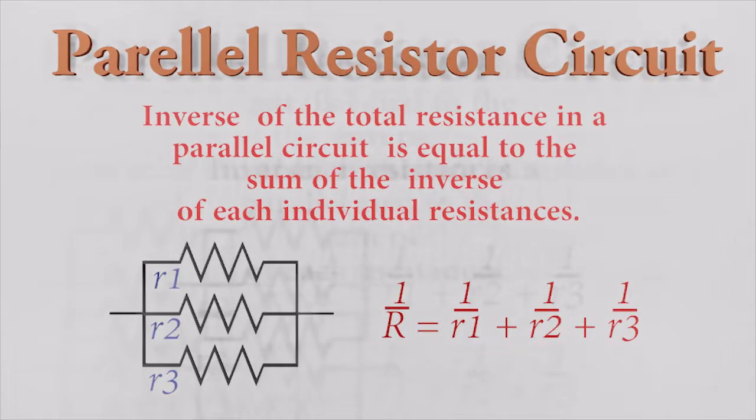In a parallel resistor circuit, the inverse of the total resistance is equal to the sum of inverse of each individual resistor.